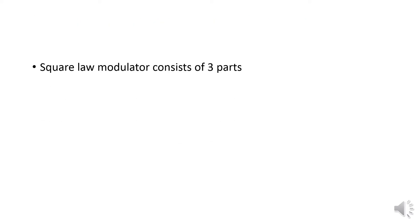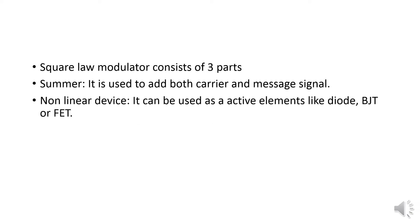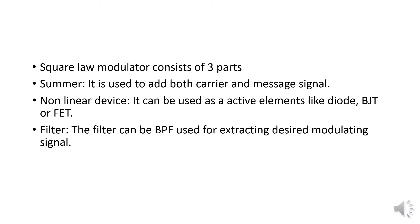The square law modulator consists of three parts. First is a summer, which is used to add the carrier and message signal. Second is a non-linear device — we use active elements such as a diode, BJT, or FET. Third is a filter — we use a bandpass filter for extracting the desired modulating signal.